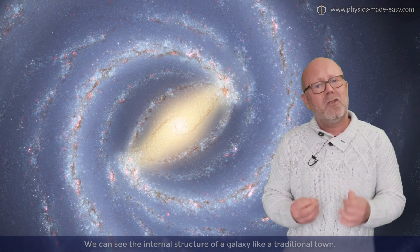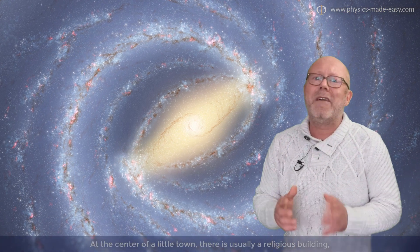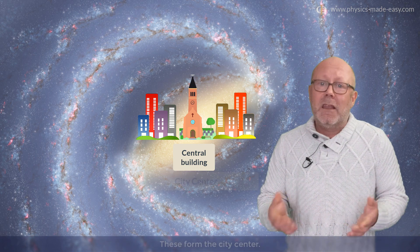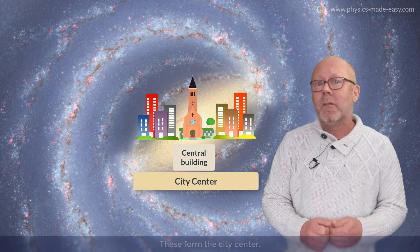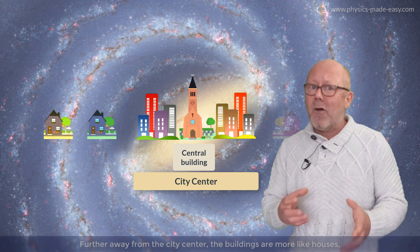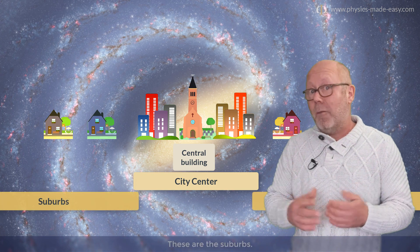We can see the internal structure of a galaxy like a traditional town. At the center of a little town, there is usually a religious building, like a temple, a mosque, or a church. Then around it, you find buildings stacked close to each other. These form the city center. Further away from the city center, the buildings are more like houses separated by gardens and parks. These are the suburbs.